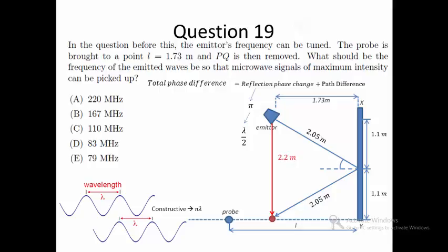Hence, this allows us to write down the following equation: n lambda equals λ over 2 plus 2.05 plus 2.05 minus 2.2.